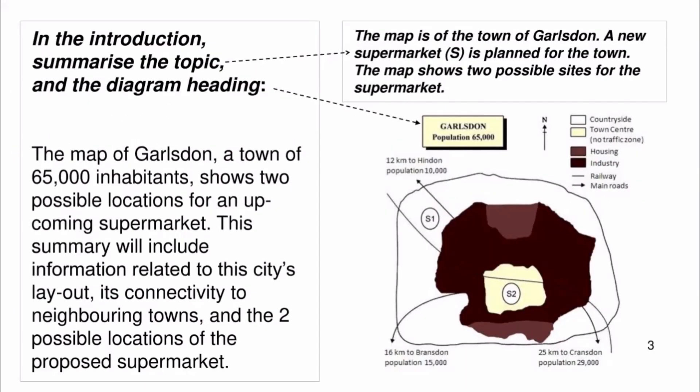In the introduction, summarize the topic and the diagram heading. The map of Garlsdon, a town of 65,000 inhabitants, shows two possible locations for an upcoming supermarket. This summary will include information related to its layout, its connectivity to neighboring towns, and the two possible locations of the proposed supermarket.